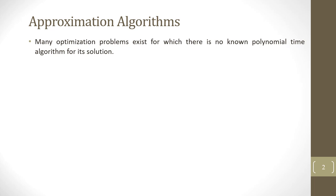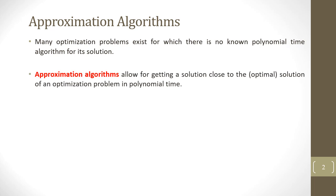Many optimization problems exist for which there is no known polynomial time algorithm for their solution. Approximation algorithms allow for getting a solution close to the optimal solution of an optimization problem in polynomial time. So we settle for solutions that are close to optimal — not more than a constant factor larger than the optimal solution.